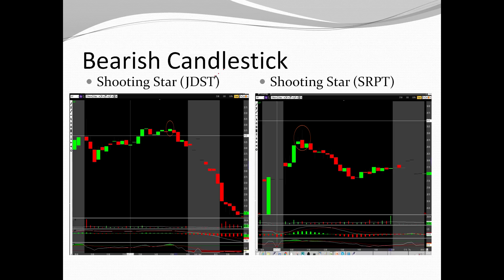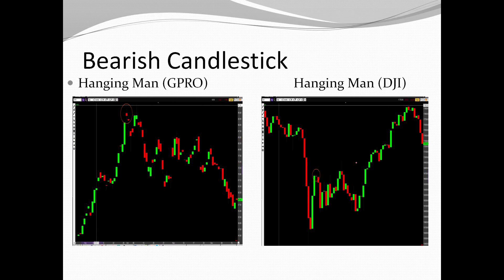A shooting star is a bearish candlestick found at the top of a trend, signaling a reversal to the downside. A hanging man is also a bearish candlestick found at the top of a trend, signaling a move to the downside.